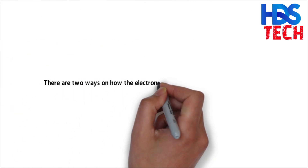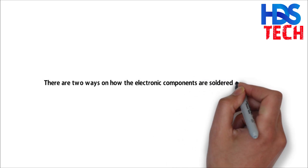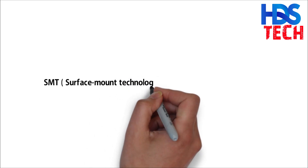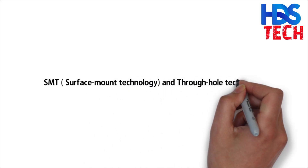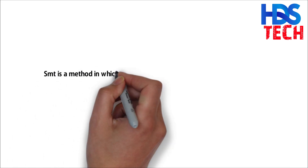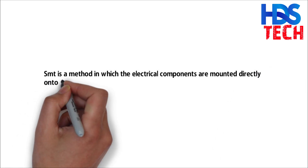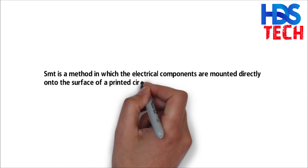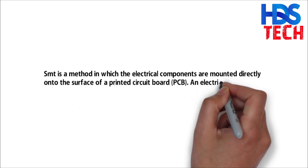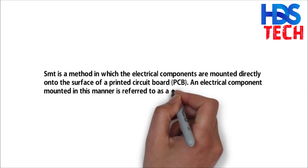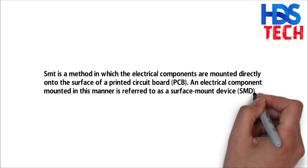There are two ways in which electronic components are soldered on the PCB. SMT is a method in which the electrical components are mounted directly onto the surface of a printed circuit board. An electrical component mounted in this manner is referred to as a surface mount device.